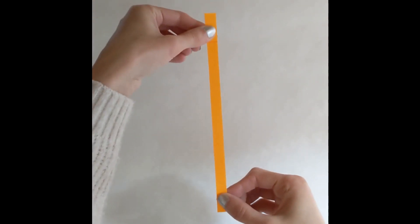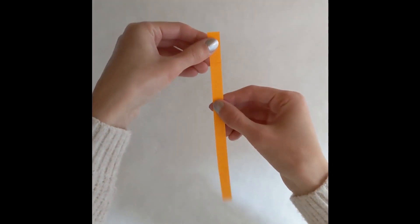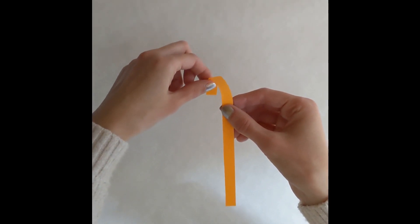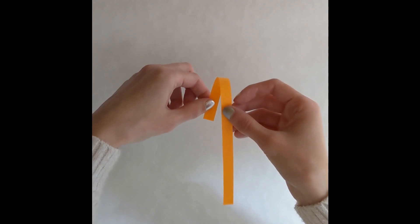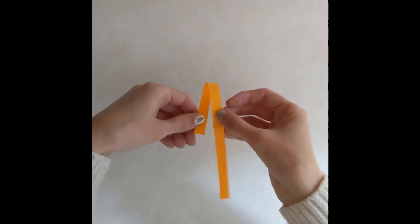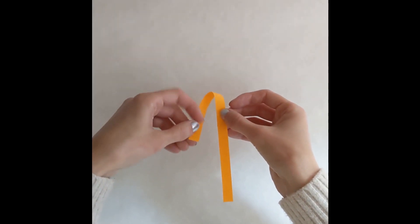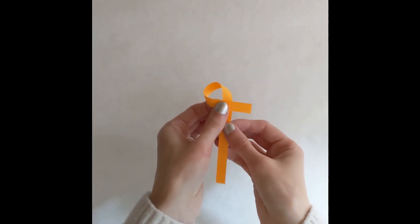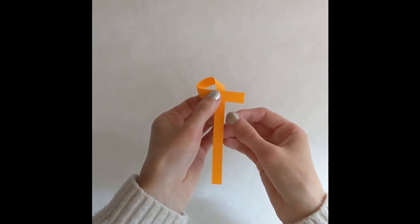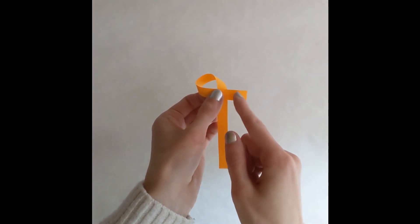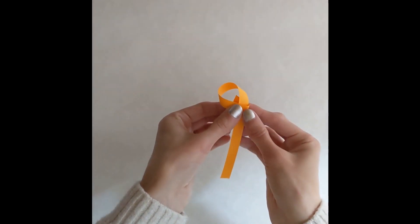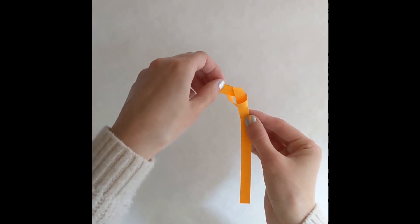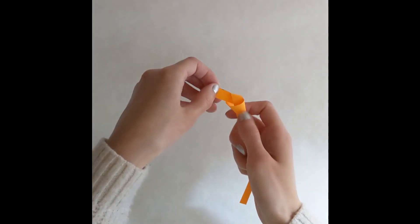Now we are going to take our strip of paper and hold it lengthwise like so. Take the top of the paper and bend it backwards and a little bit to the side. Then wrap it in front of and across the vertical stem. Now you should have a long tail, a short tail, and a loop. Now we are going to take our short tail and bend it backwards and put it through the loop, pulling gently. This should end up looking like a knot.